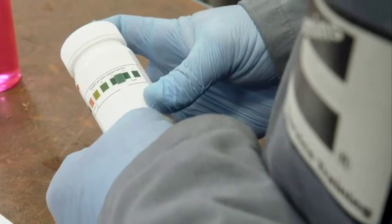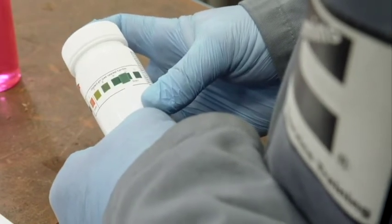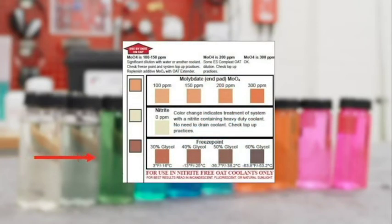Once the test is complete we can move on to interpreting the results. The freeze point is the most self-explanatory scale on the card. This scale provides an estimation of the percentage glycol in the coolant and the associated freeze point protection provided by the coolant.